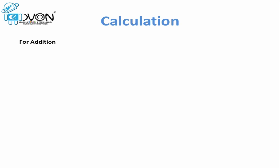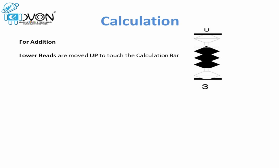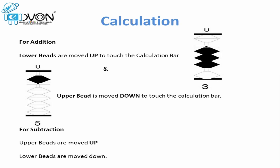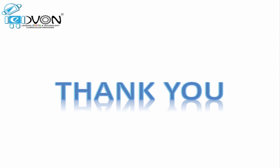To know which beads should be counted in our answer: beads touching the calculation bar at the time of the answer would be counted in our final answer. If we are doing addition, we move lower beads up to touch the calculation bar, and if we are doing addition on upper beads we move them down to touch the calculation bar. For subtraction, we move lower beads down away from the calculation bar, and we move the upper bead up away from the calculation bar.